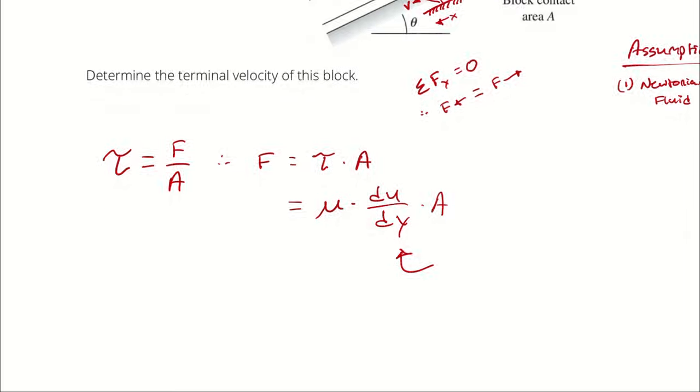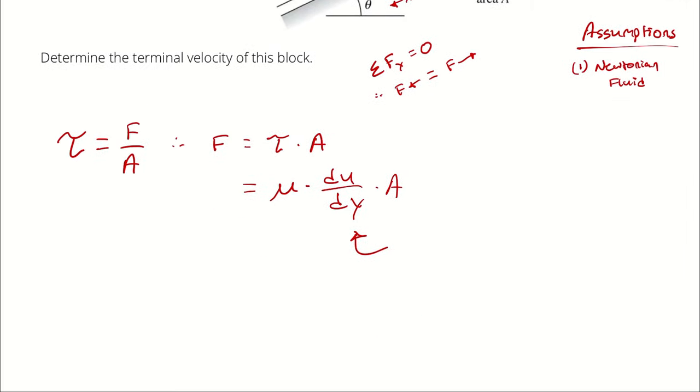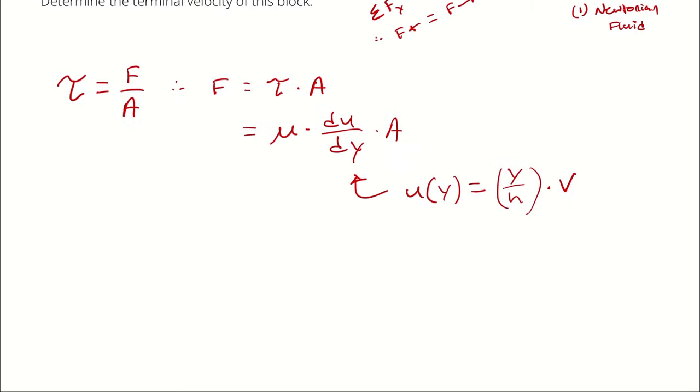And just like before, if we have a linear profile, we can describe that as the proportion of the way up you are between zero and one millimeter multiplied by the velocity of the block, which is the unknown. And if I rearrange this to write it as v over h times y, then when I derivate it, the y disappears and I have v over h. Therefore, this is dynamic viscosity multiplied by the velocity of the block over h times the area of effect.